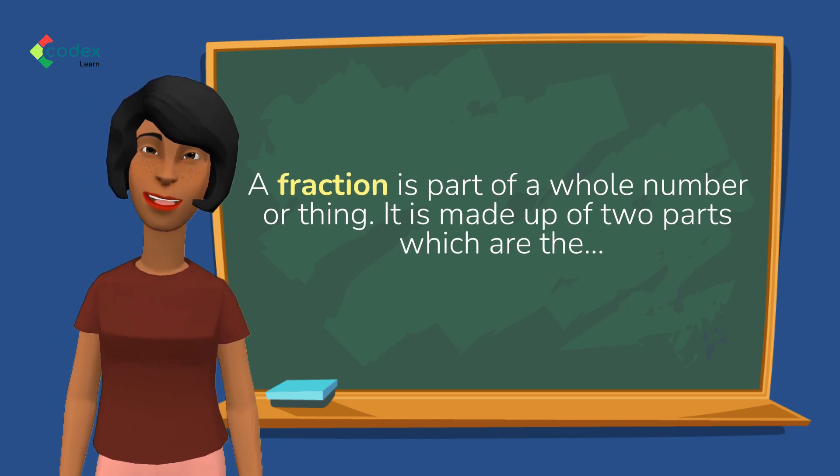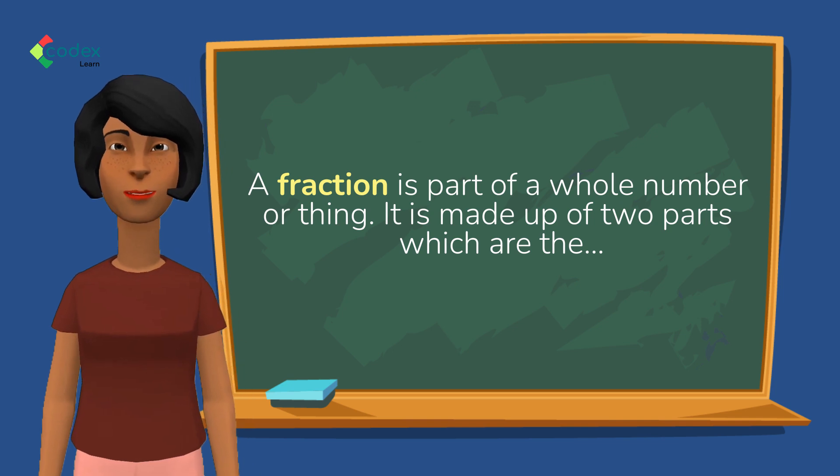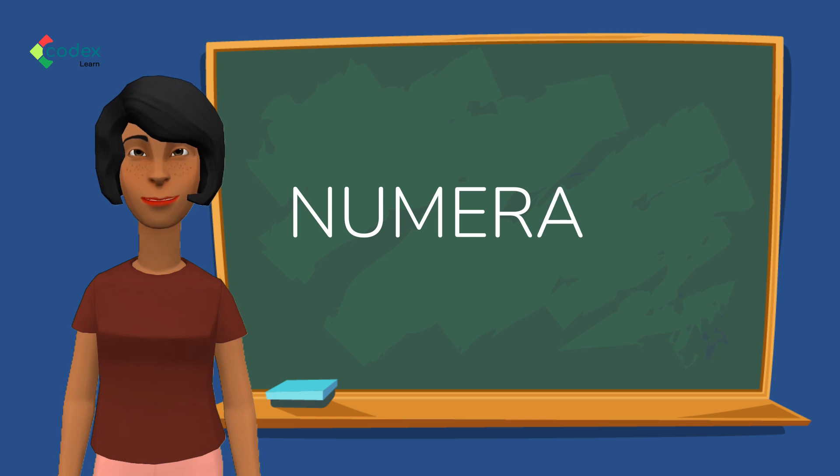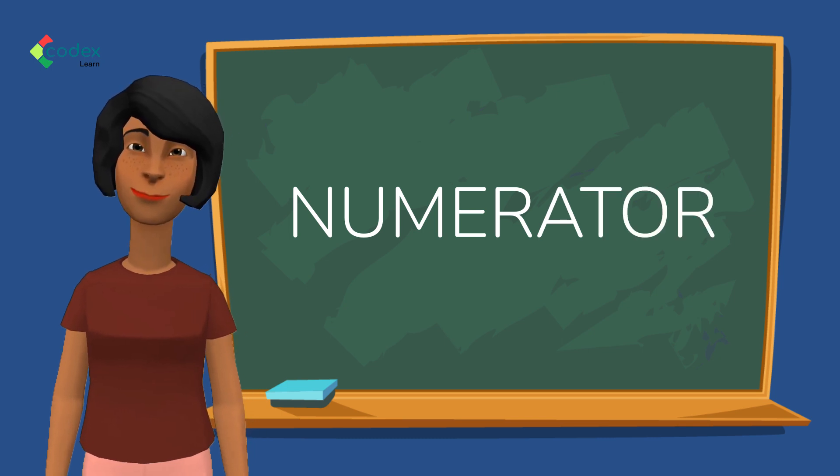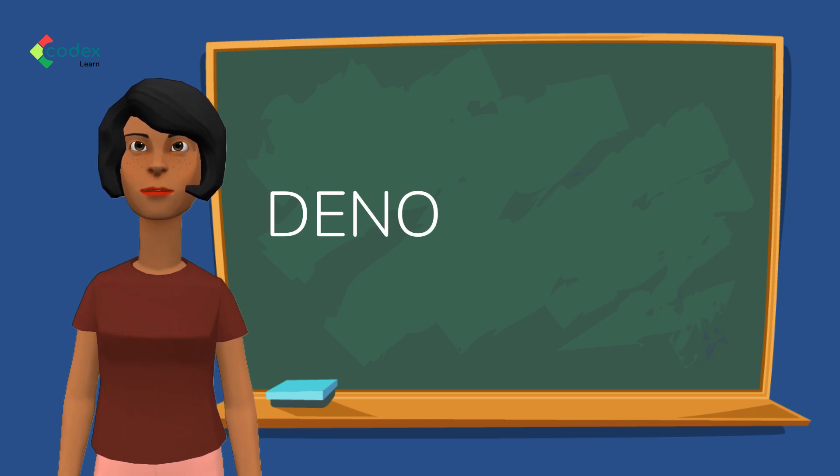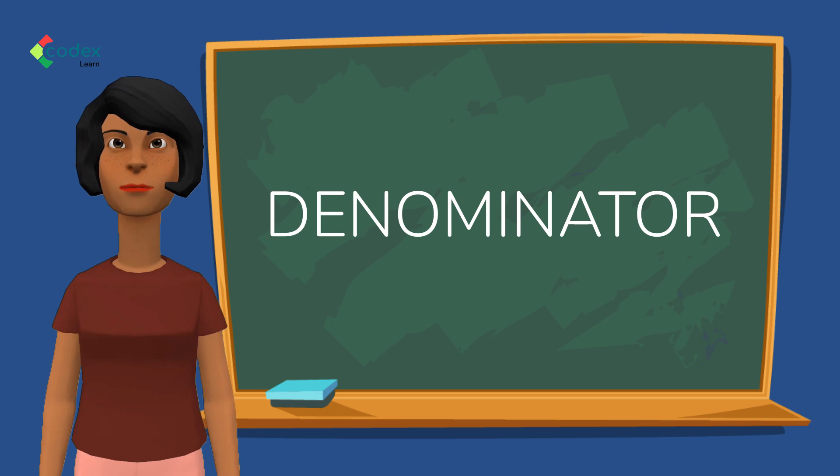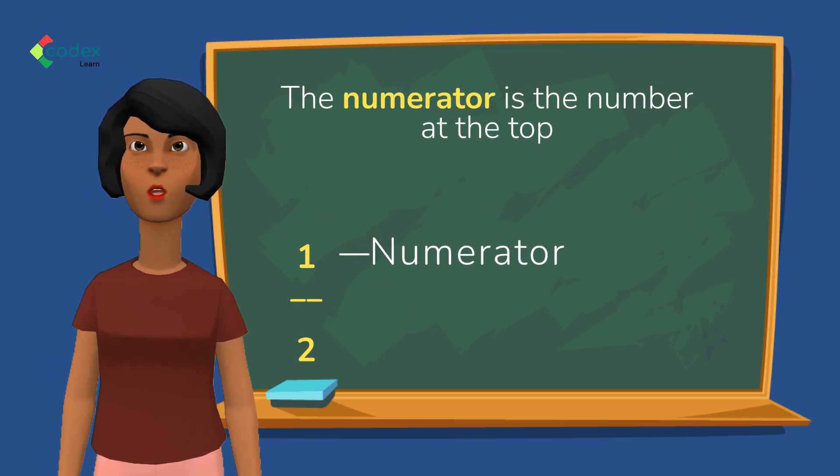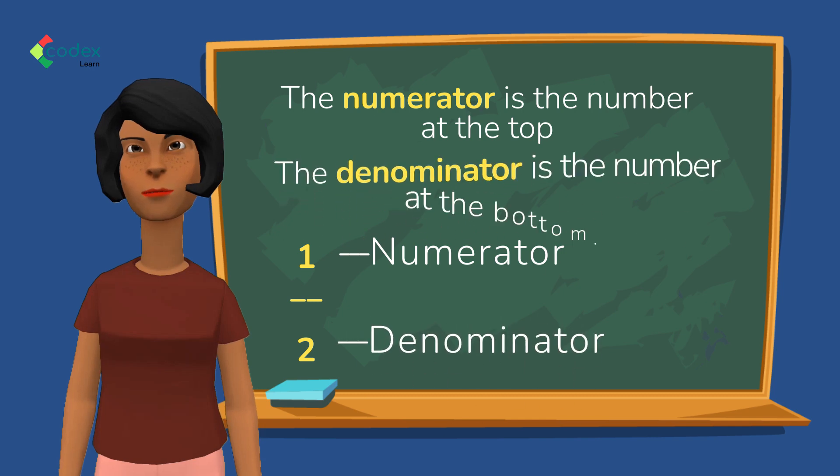It is made up of two parts which are the numerator (N-U-M-E-R-A-T-O-R) and the denominator (D-E-N-O-M-I-N-A-T-O-R). The numerator is the number at the top and the denominator is the number at the bottom.